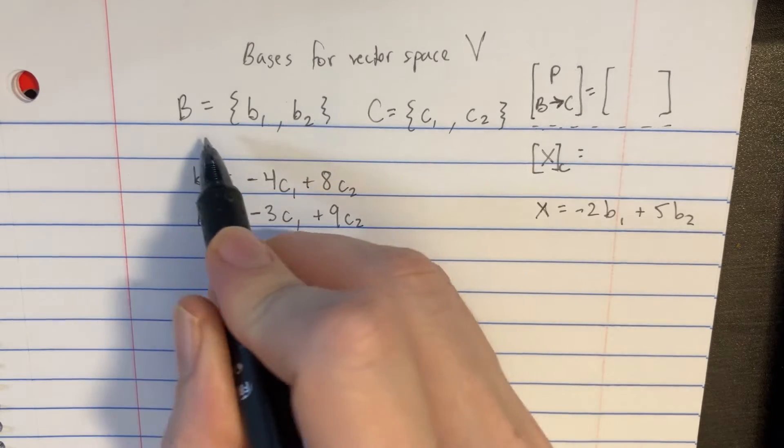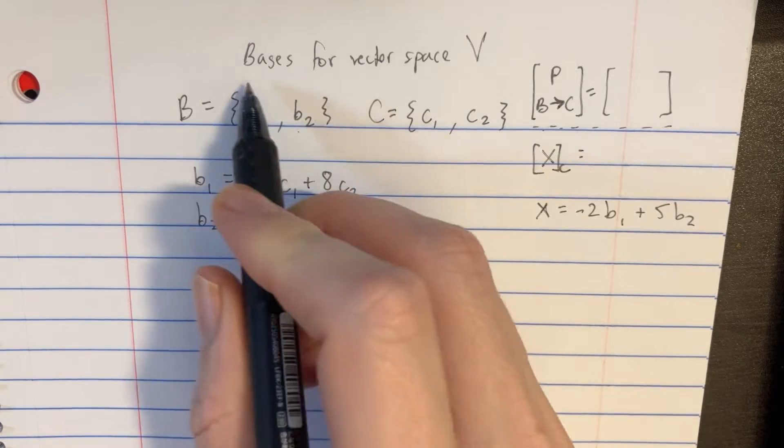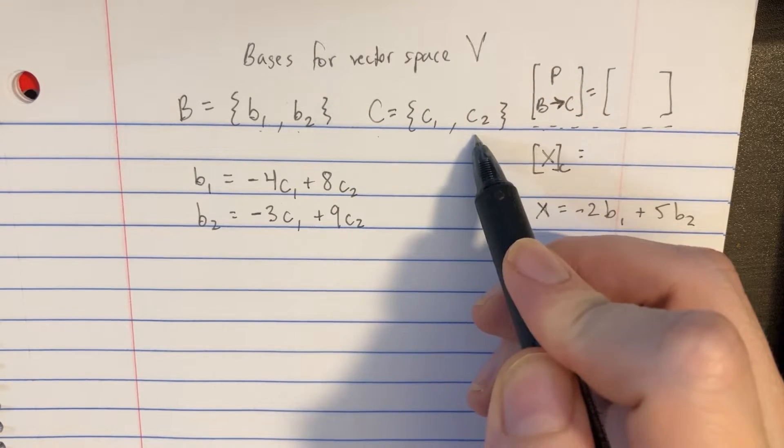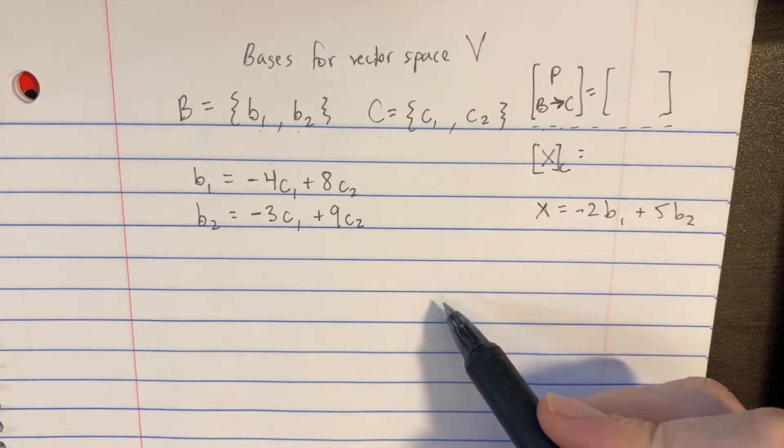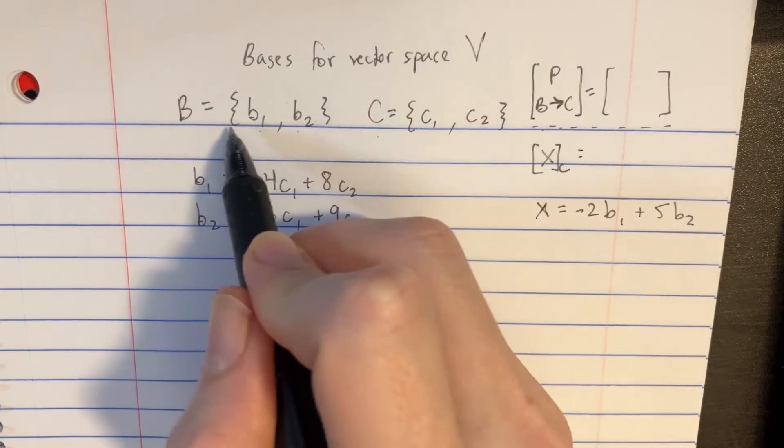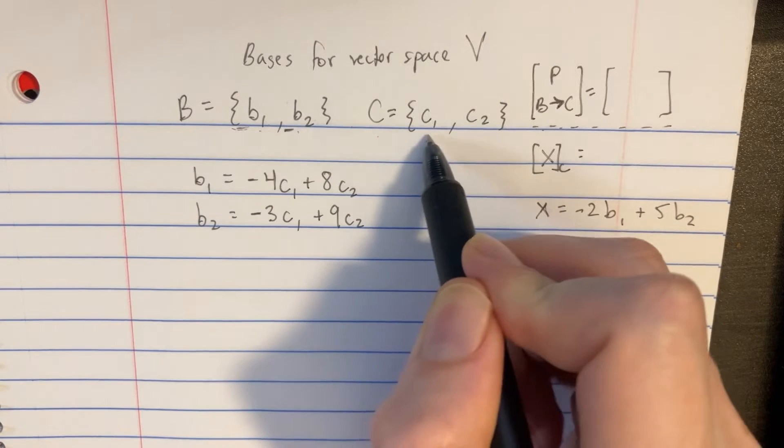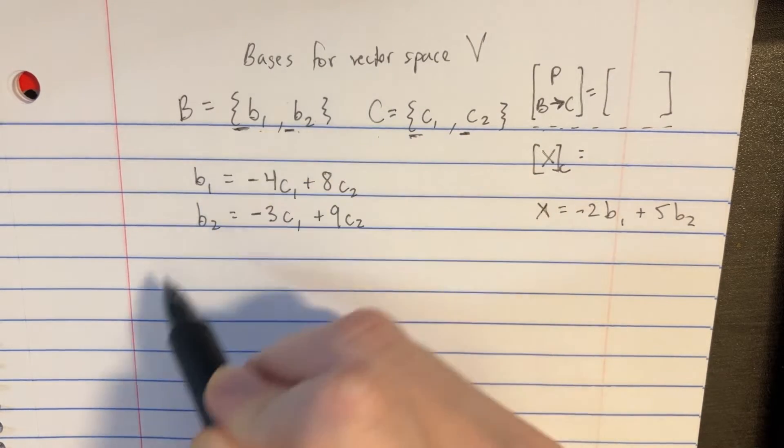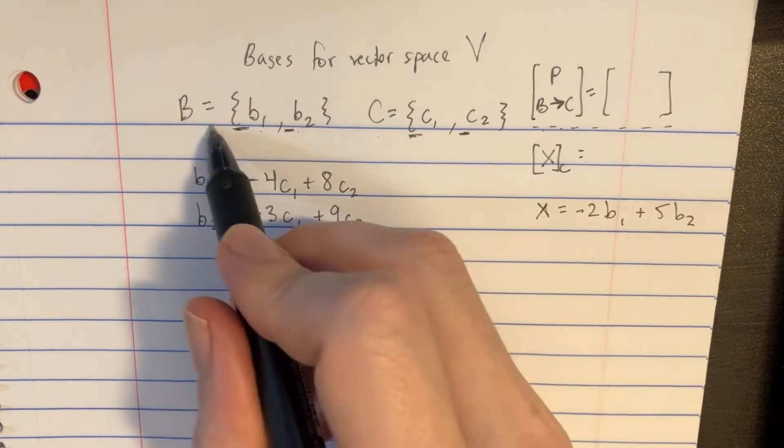We have two sets, B with these two basis vectors for the vector space V, and there's C with these two basis vectors for the same vector space. We're trying to find the matrix that's going to be able to translate the coordinate vectors here into the coordinate vectors over here. We're trying to represent the same vector for both of these two.